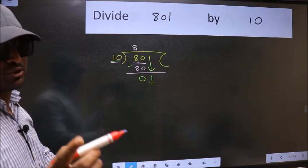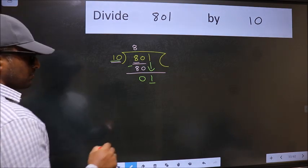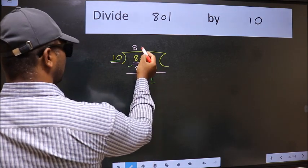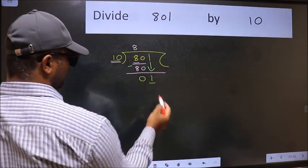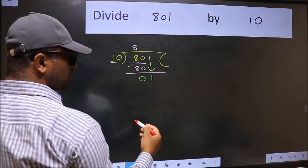Instead of that, what you should think of doing is which number should we take here? If I take 1, we will get 10, but 10 is larger than 1. So what we should do is we should take 0.